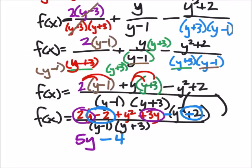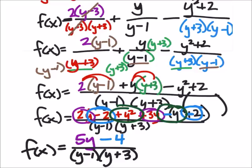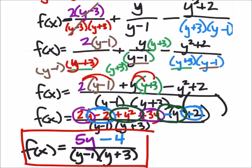And then we got this y squared and this negative y squared which cancel out and so we're left with the function 5y minus 4 over the quantity y minus 1 times quantity y plus 3. And this in the end is our final answer because 5y minus 4 cannot be simplified.